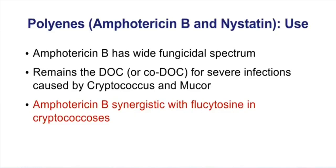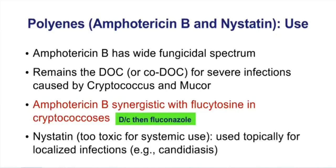When starting somebody on Amphotericin B and flucytosine, you give that combination for a defined period of time, then discontinue and switch to a drug like fluconazole to minimize side effects. Nystatin is also very toxic — in fact, too toxic for systemic use. We only use it topically for localized infections like candidiasis, available as a swish-and-swallow formulation for oral candidiasis, which reduces systemic absorption.